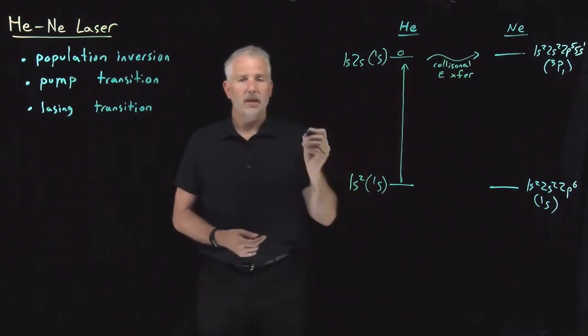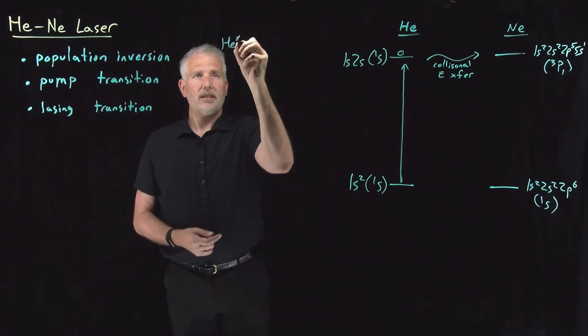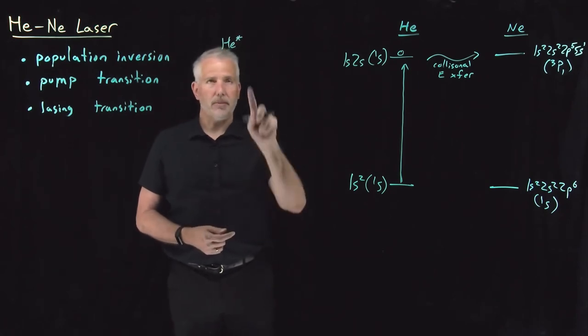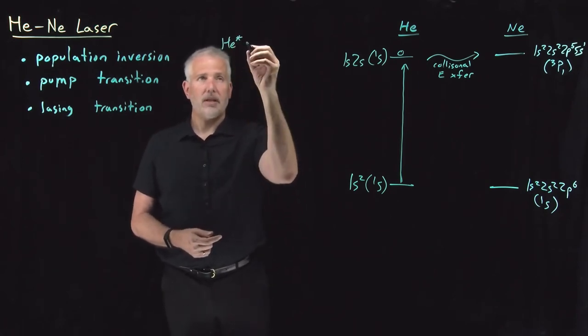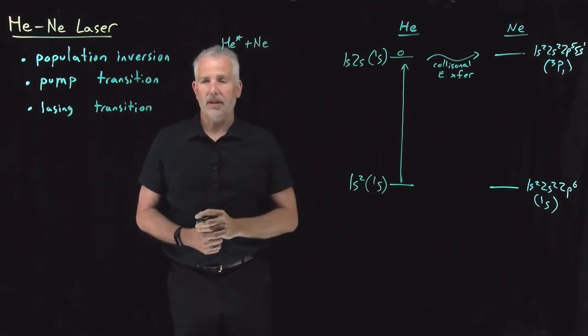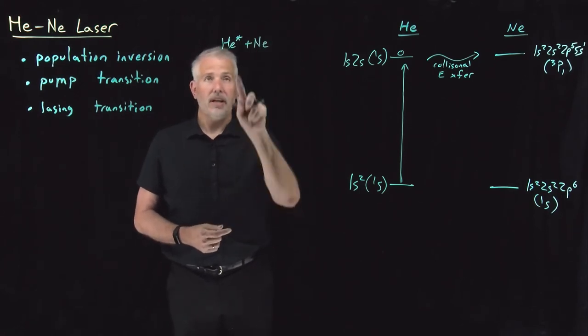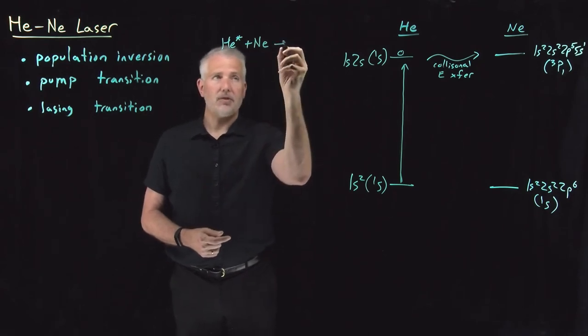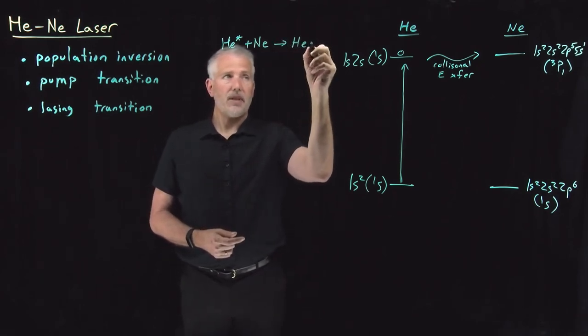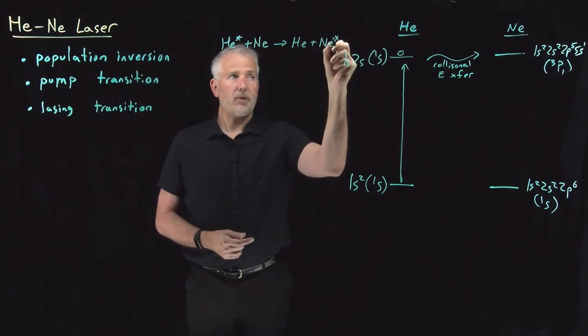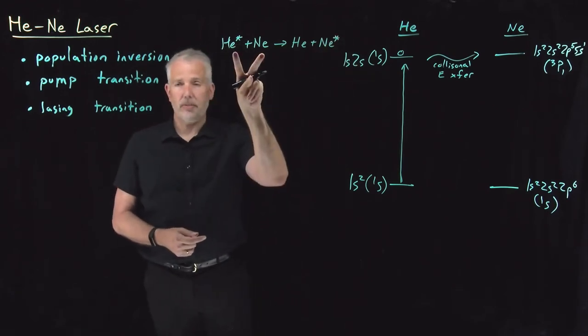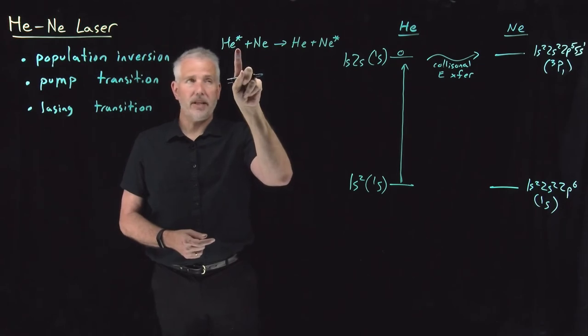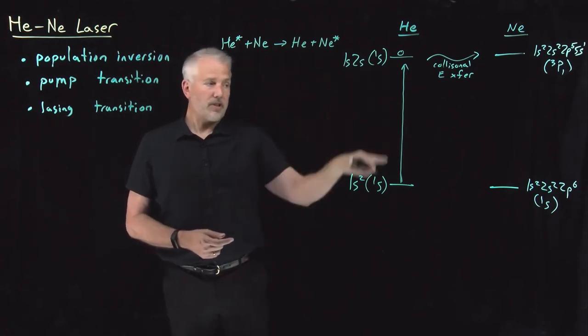So essentially what happens is an excited helium atom, I'll write the excited helium atom as a helium with an asterisk on it. In the gas, these two atoms can come near each other, collide with one another, and the electronic excitation in the helium atom can be transferred to the neon. So we'll write that chemical reaction as just a collision between a helium and a neon atom.